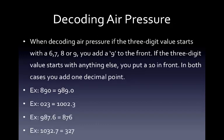Your first step to this weather map is to decode the air pressure. When you are decoding your pressure, anything that starts with a 6, 7, 8, or 9, you add a 9 to the front and then stick a decimal place in at the end. If the three-digit value starts with anything else, you put a 10 in front and add that decimal point in.